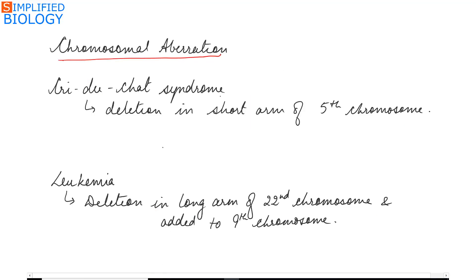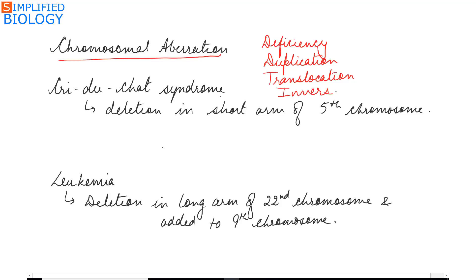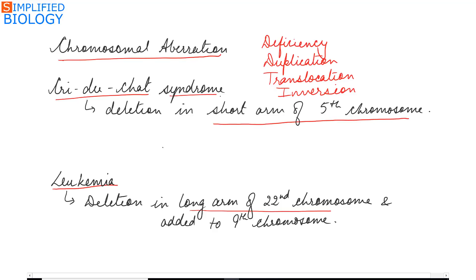Chromosomal aberration means changes occurring within chromosomes. It is of four types: deficiency — certain genes are lost; duplication — certain genes are present twice; translocation — certain genes' position has been shifted; and inversion — certain genes are attached in reverse order. Example: Cri du Chat syndrome (cat's cry) occurs due to deletion in the short arm of the 5th chromosome. Another example is leukemia, where deletion in the long arm of the 22nd chromosome (Philadelphia chromosome) — it is deleted from the 22nd chromosome and added to the 9th chromosome, making it an example of translocation.